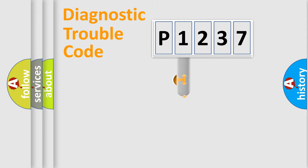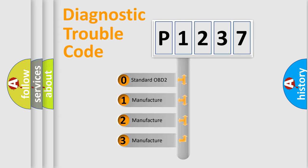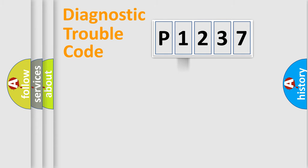This distribution is defined in the first character code. If the second character is expressed as zero, it is a standardized error. In the case of numbers 1, 2, or 3, it is a manufacturer-specific expression of the car error.